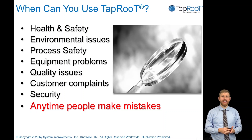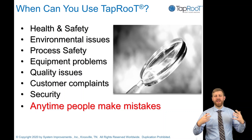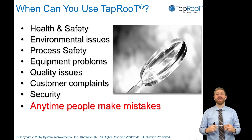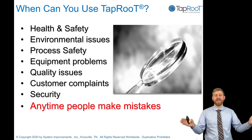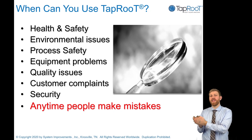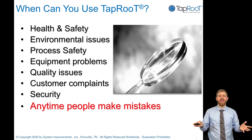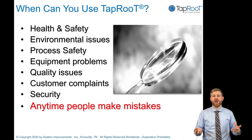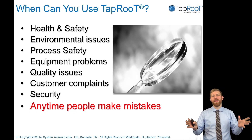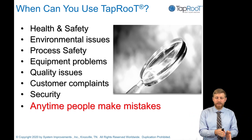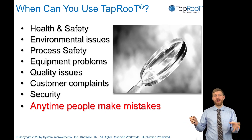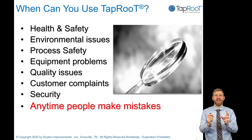Taproot is really focused on understanding why people make mistakes and how to build a system that prevents them. You can apply our techniques in health and safety, environmental issues, process safety, quality issues, customer complaints, and security. It works anywhere people are making mistakes in a system and you want to prevent those mistakes from reoccurring.